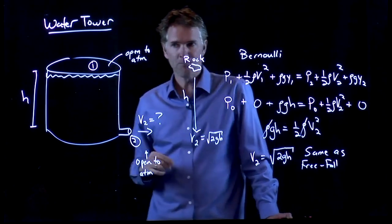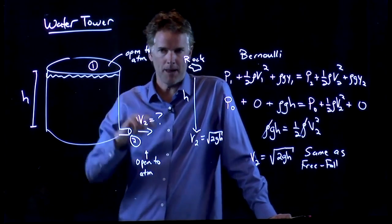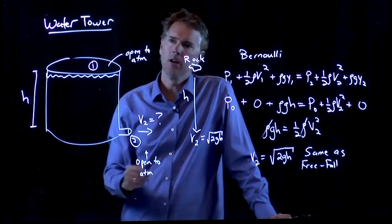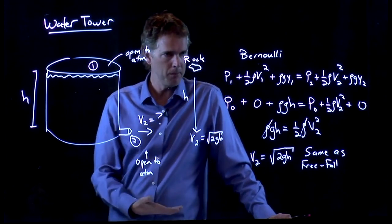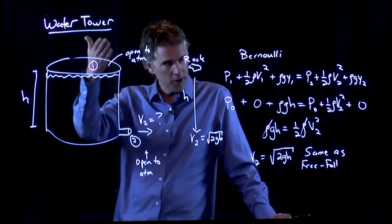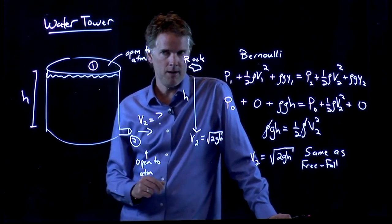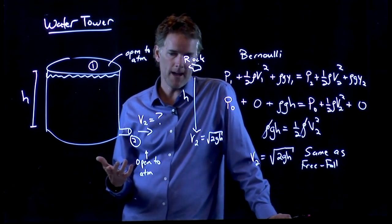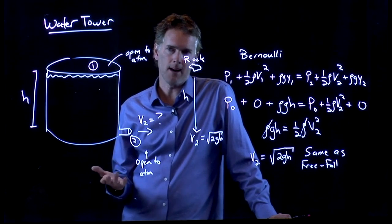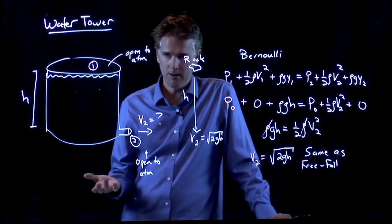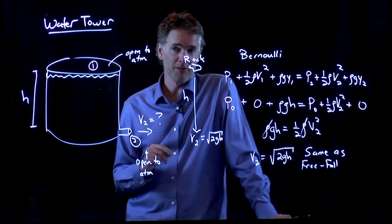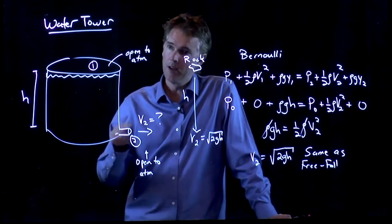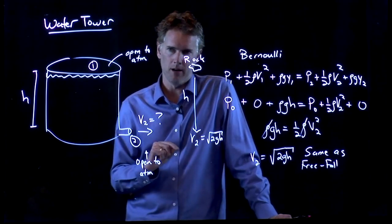And this is also why when your house is up at the top of the mountain, typically your water pressure is less than the people at the bottom of the mountain because the water falls further. And this also tells you that if you put the water tower at the bottom of the mountain, the people at the top of the mountain aren't getting any water. You have to do something else to get them water. You have to make a pump and actually drive the water up the mountain.